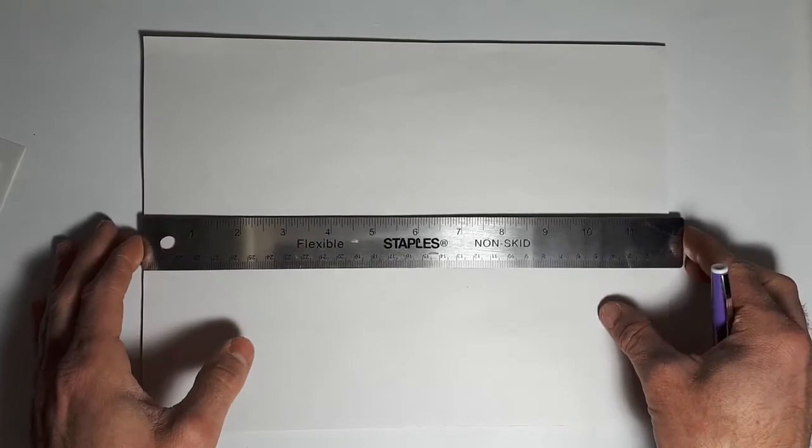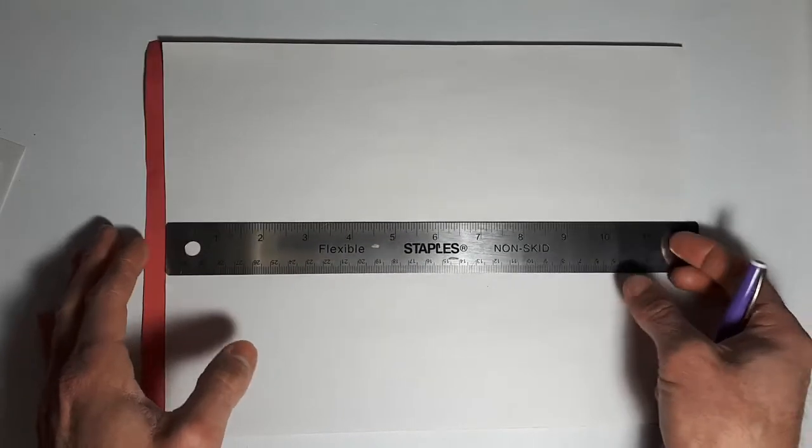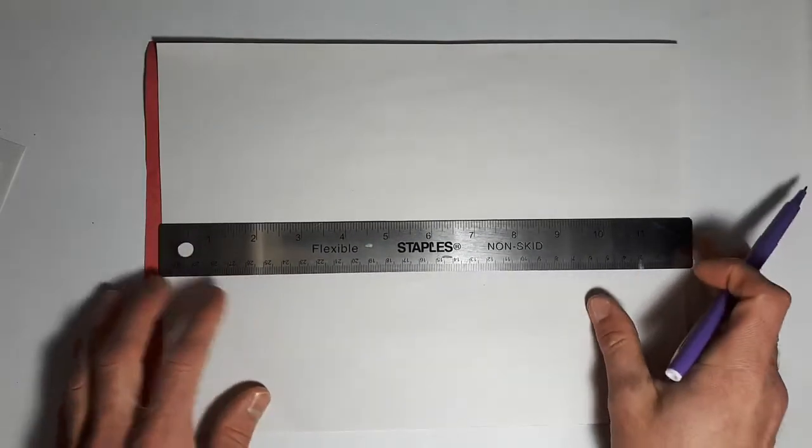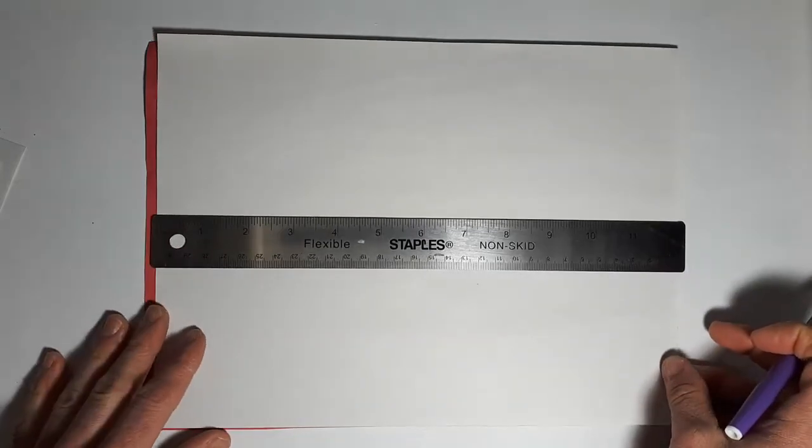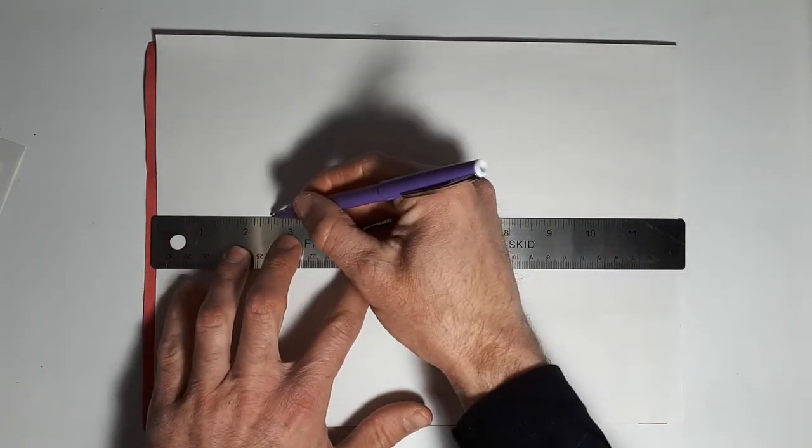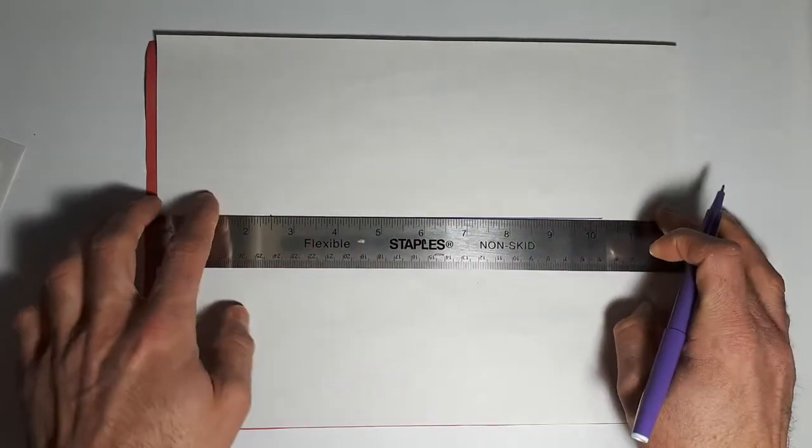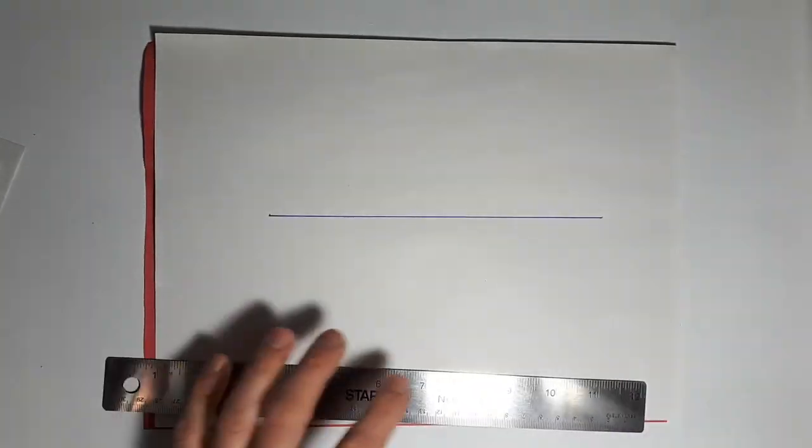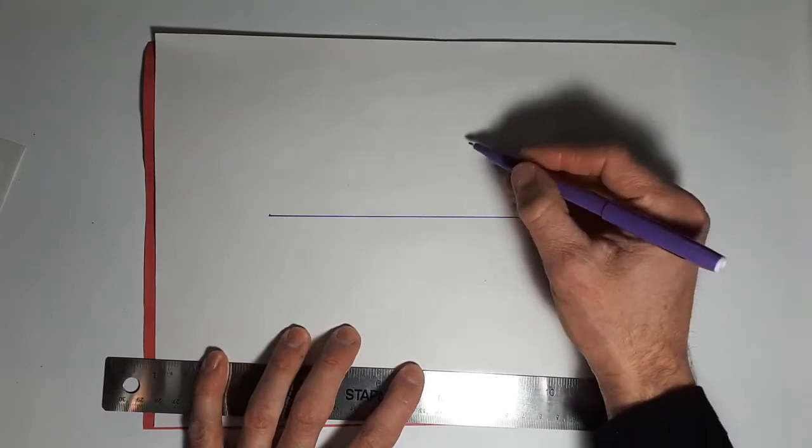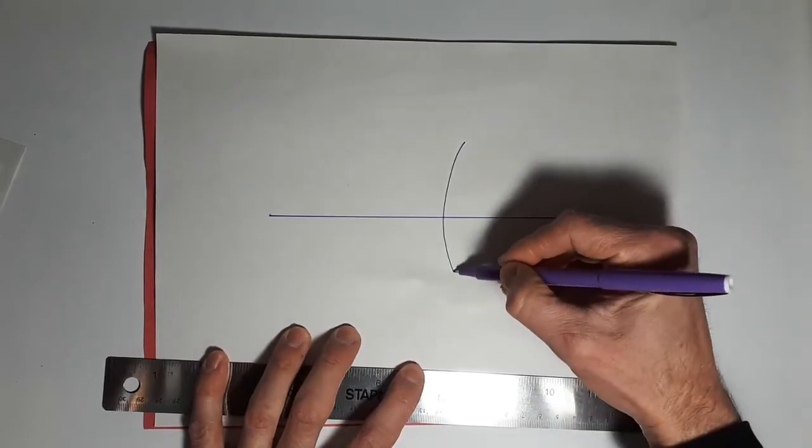So we'll start of course with our principal axis, l'axe principal. This is something that will probably be already in your booklet, just a nice straight horizontal line. And then of course we have to put our mirror in, so it's going to be a miroir convex.